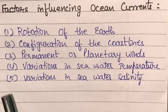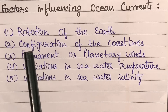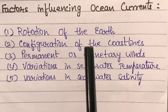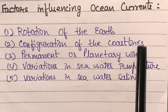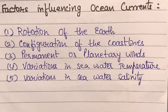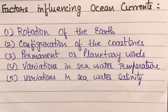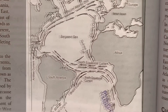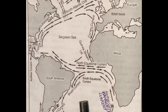The second factor is the configuration of the coastlines. The shape of the coasts of continents also plays an important role in the flow of ocean currents, as we can see in this diagram.